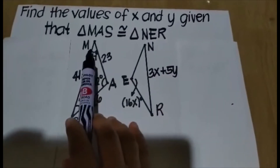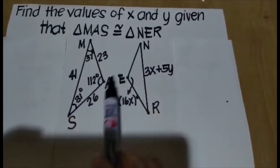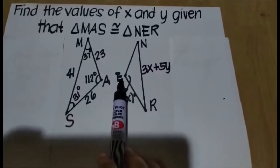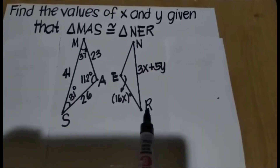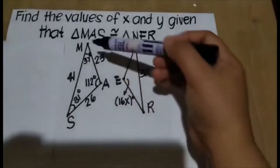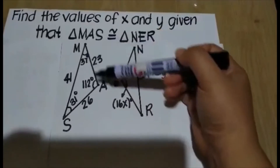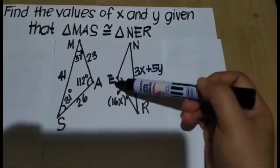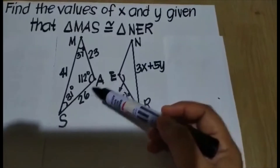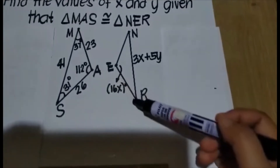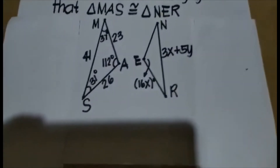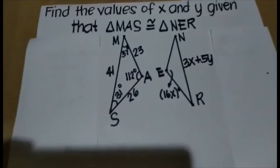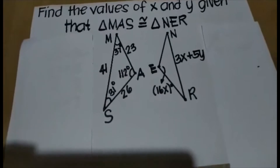So we can say angle M is congruent to angle N, angle A is congruent to angle E, angle S is congruent to angle R. Then segment MA is congruent to segment NE, segment AS is congruent to segment ER, and segment MS is congruent to segment NR.